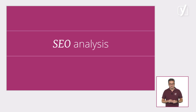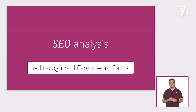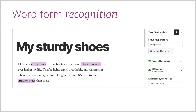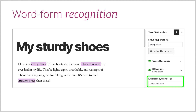Back to the SEO analysis — there is another cool feature I'd like to tell you about. If you use Yoast SEO Premium, the analysis will recognize different word forms. If you optimize for the keyphrase 'sturdy shoes,' for example, it will also recognize 'sturdier shoes.' This includes singulars, plurals, possessives, comparatives, and different tenses. There is also great support for synonyms — you don't have to use the exact same keyphrase to get positive feedback. If you enter 'robust footwear' as a synonym to 'sturdy shoes,' the checks in the Premium plugin account for that in the assessment, enabling you to write engaging, readable, and findable texts.